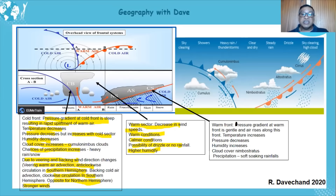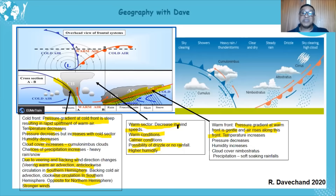Now the warm front: the pressure gradient at the warm front is gentle — not steep like at the cold front. The air rises gently along the front. As it rises and cools, it causes some rainfall. Temperature increases because it is the warm front. Pressure will decrease because air is rising.